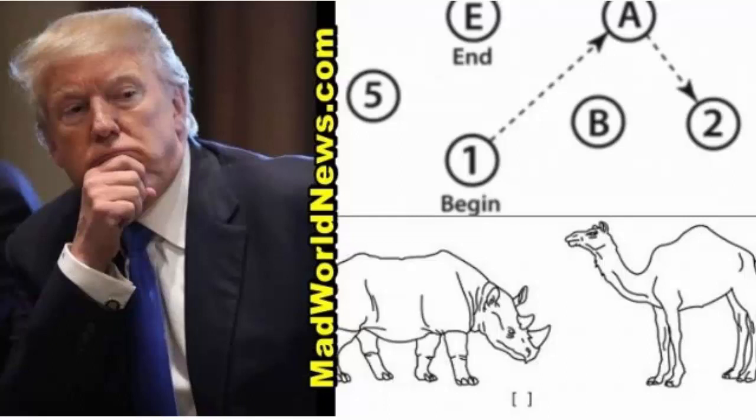A list of letters is read at a rate of one per second. Every time the letter A is said, tap your hand: F-B-A-C-M-N-A-A-J-K-L-B-A-F-A-K-D-E-A-A-J-A-M-O-F-A-A-B. Give one point if there were zero errors or just one error.